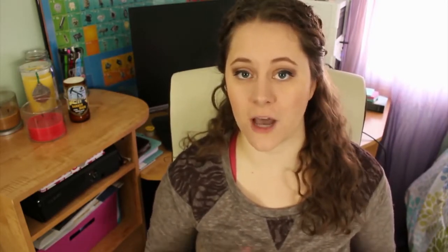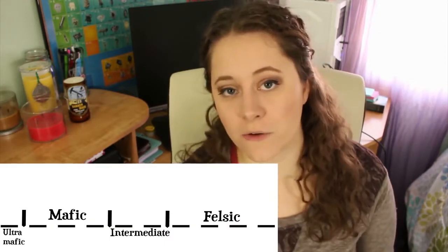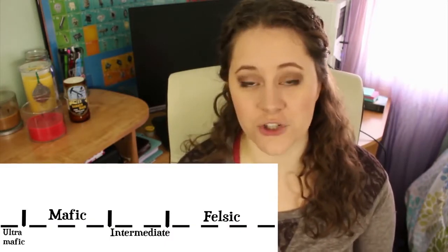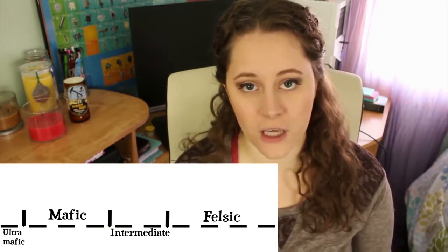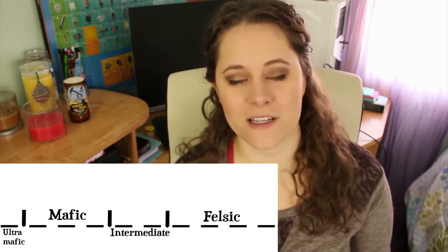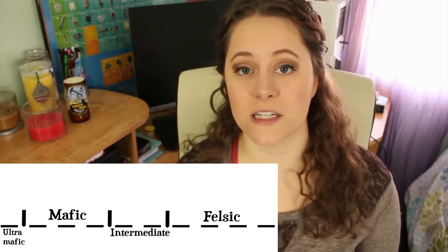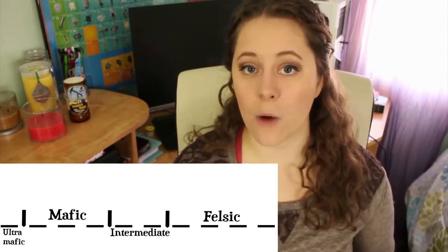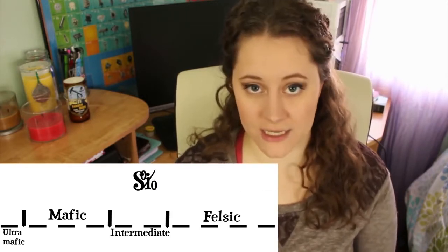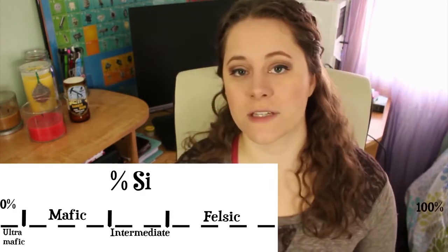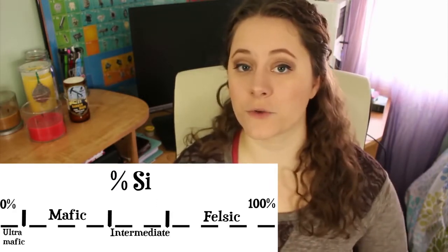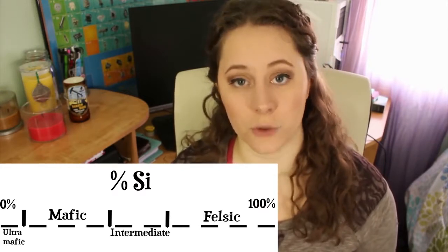While we might say that a rock is either mafic or felsic, it's important to remember that these are actually just members of a scale. A rock can range anywhere from an ultramafic composition to felsic with an intermediate phase thrown in the middle. Mafic and felsic deals with composition, specifically how much silica is in the rock. The higher the percentage of silica, the farther towards the felsic end of the spectrum you go.